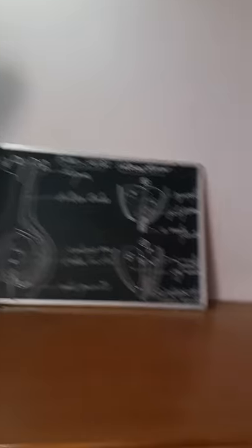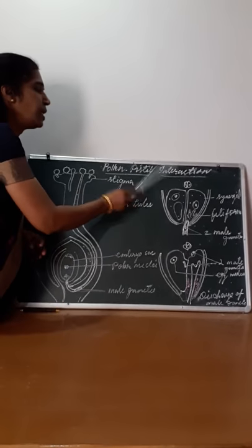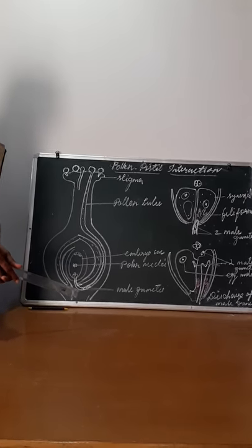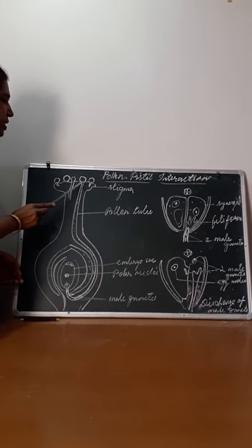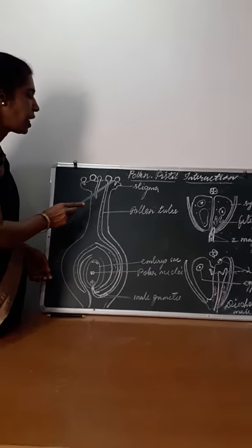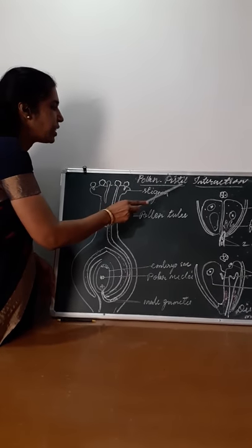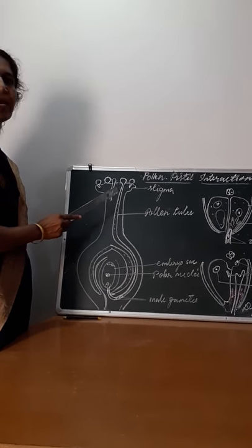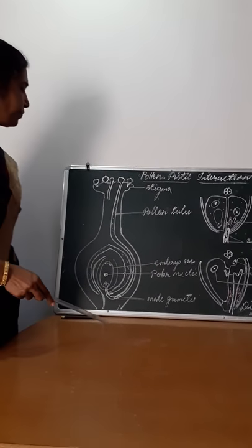In today's class, you will learn about pollen-pistil interaction. What is pollen-pistil interaction? Landing of pollen on stigma and its interaction with the pistil, carpel, or the gynoecium — that is known as pollen-pistil interaction.